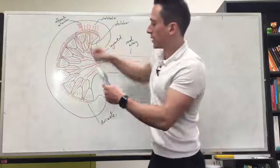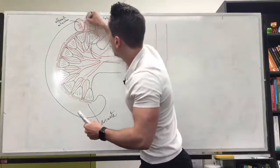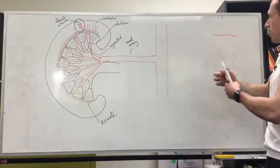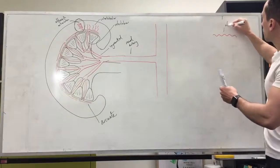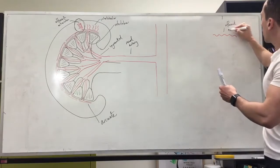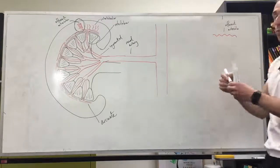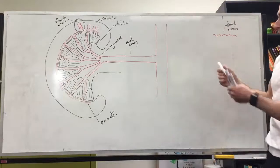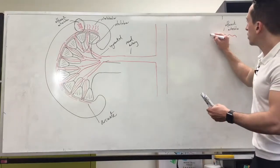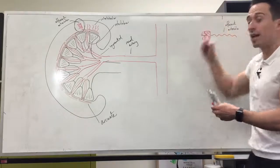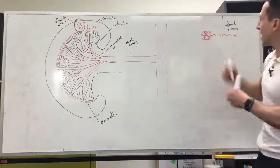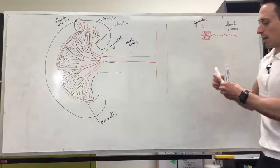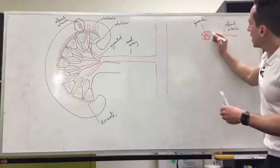Let's zoom in on this area. We've got the afferent arterioles — arterioles have lots of smooth muscle so they can change the diameter of the blood vessel. The afferent arterioles then turn into a messy-looking capillary bed called a glomerulus. A glomerulus is Latin for 'ball of yarn,' which is exactly what it looks like. The important thing about the glomerulus is that it articulates with the renal capsule, and together with the nephron, this is the filtration unit of the kidneys.